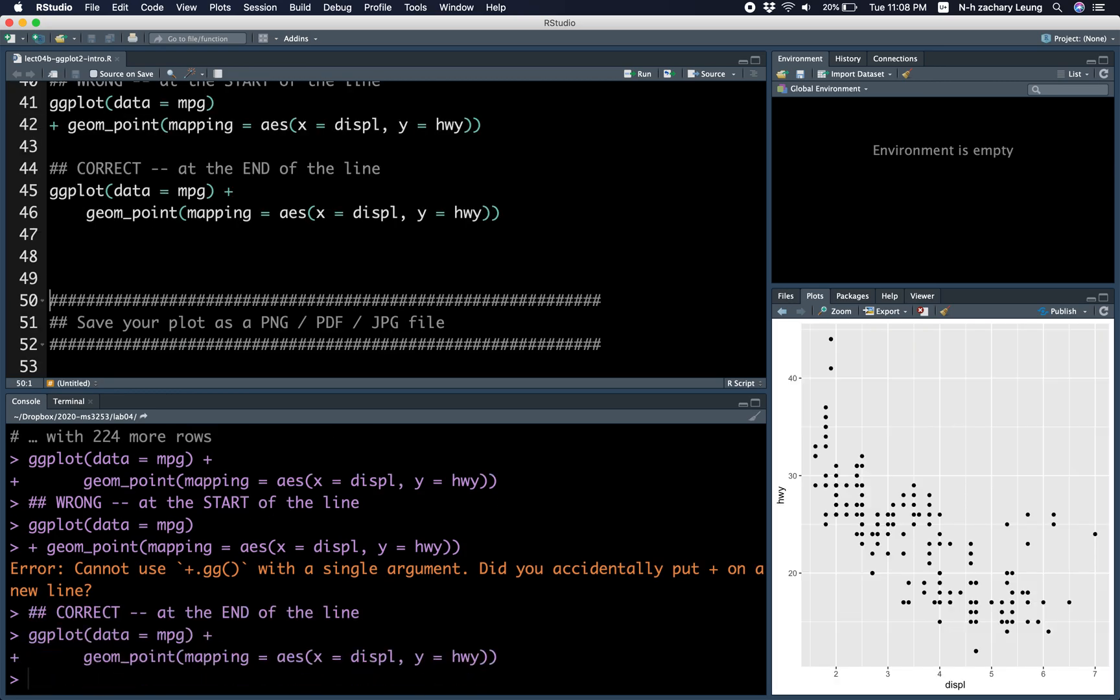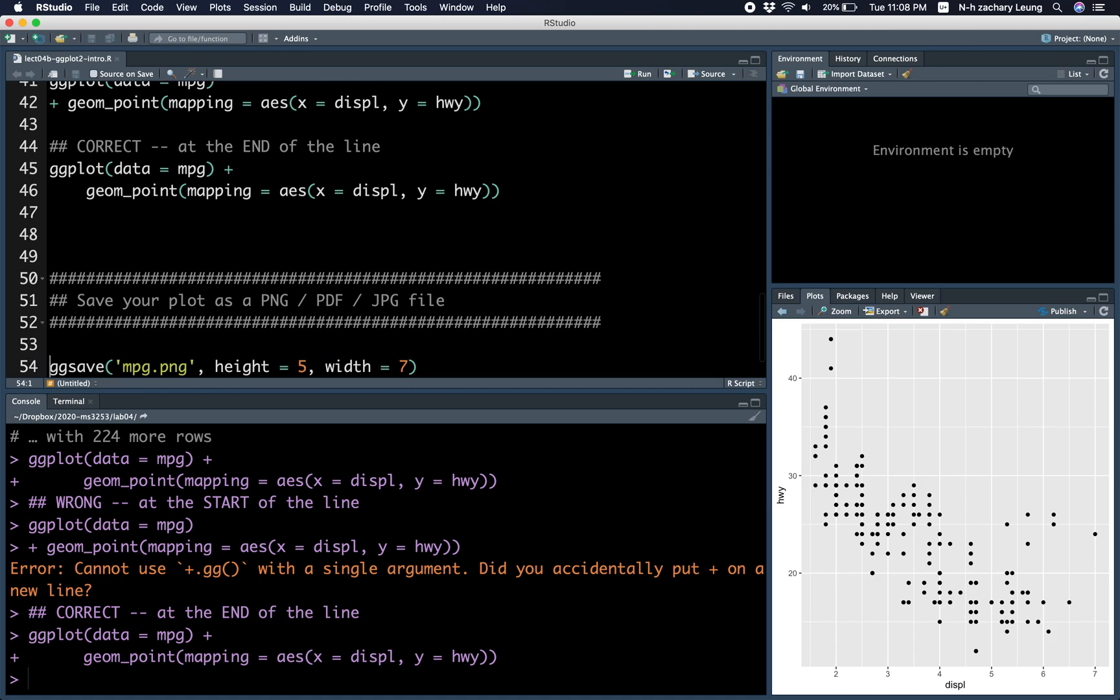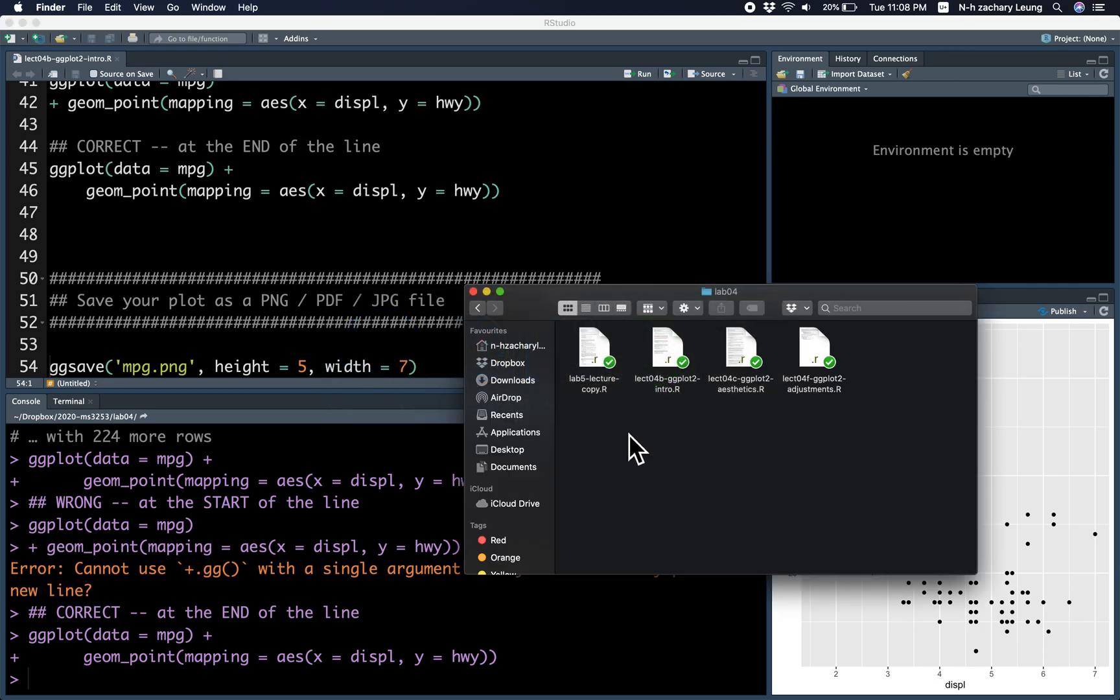And this is the right code. All right. So now we can save the previous. ggsave basically saves the last most recent plot. In other words, this plot here as a file in the working directory. So this is my working directory right here.